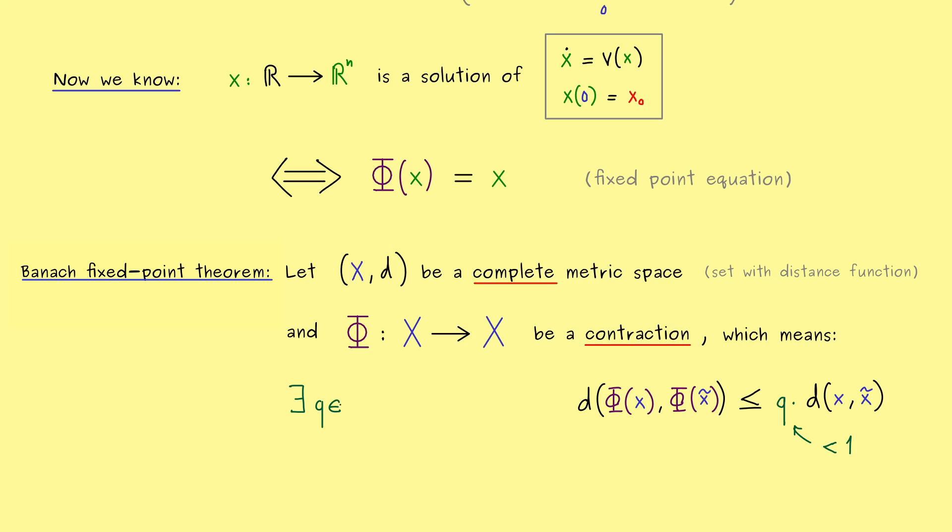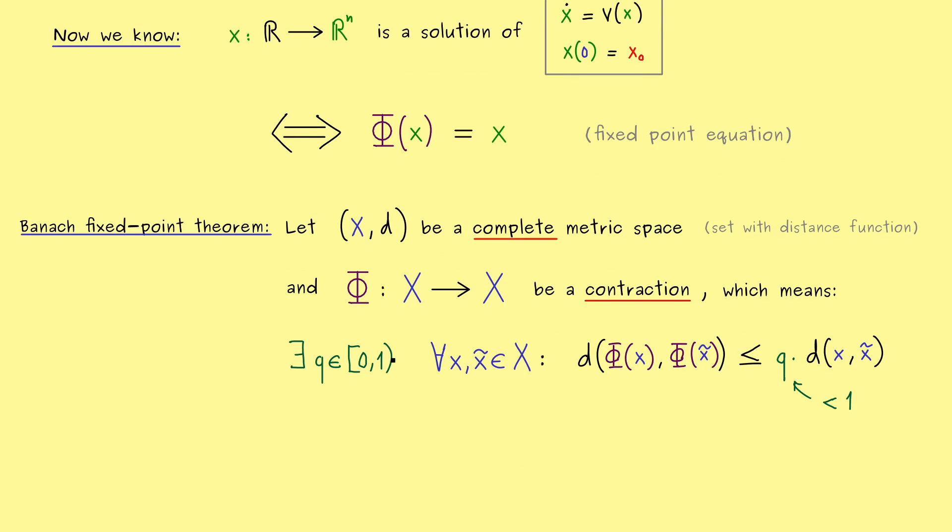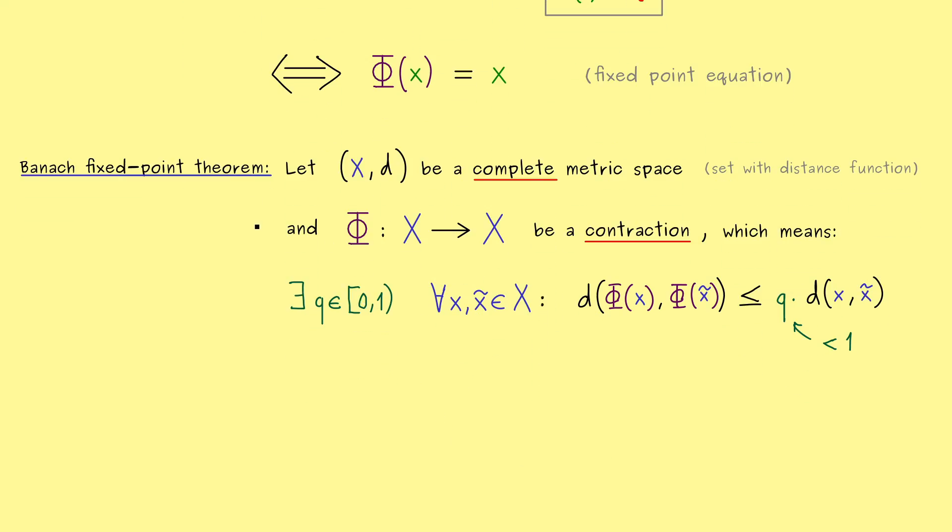Hence the existence of this q we have to put into the definition. More precisely, we want that we have a q between 0 and 1. But most crucially, 1 is excluded, so we don't have the case that we stay at the same distance. And we also have the very important fact that this q holds for all x and x tilde in X. In this sense, this q is a universal constant. Okay, so now this is the whole assumption we need.